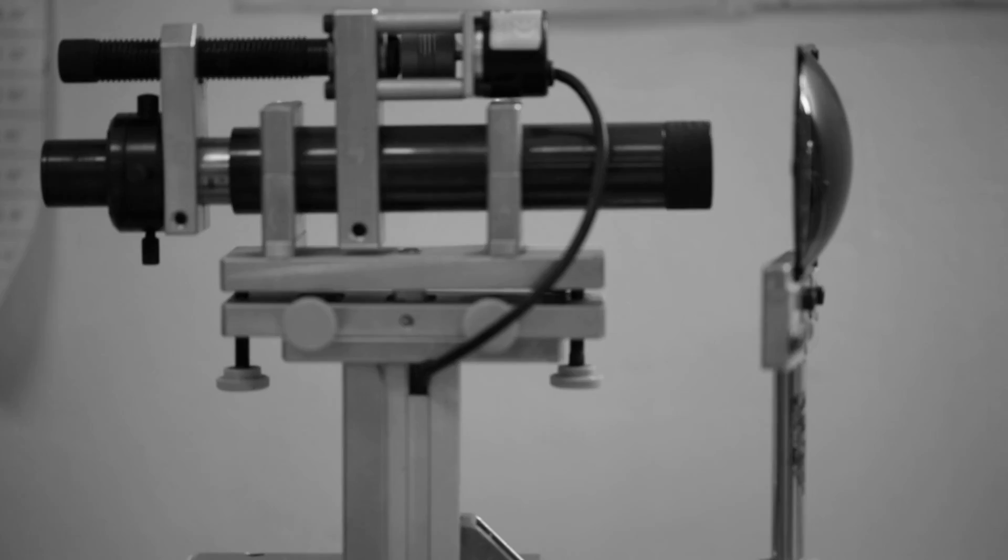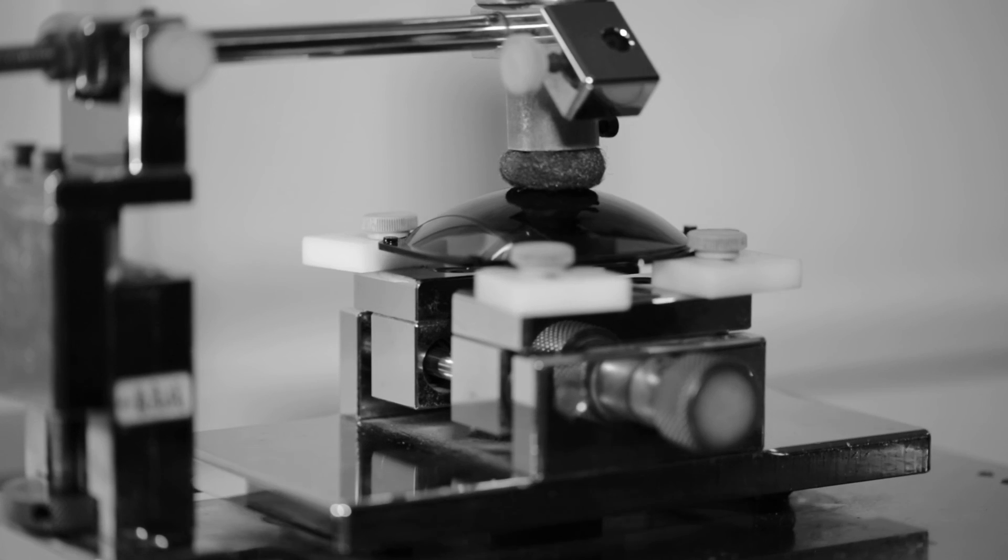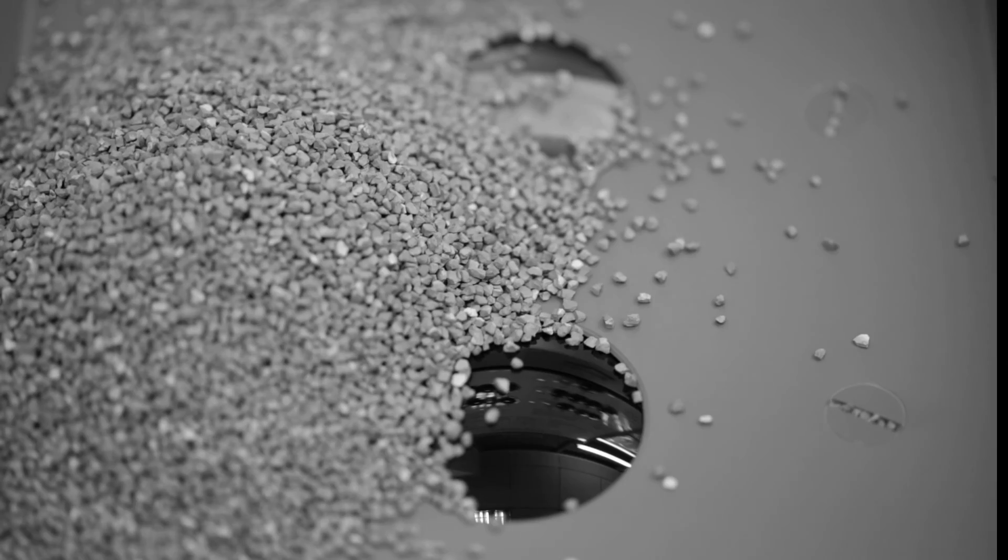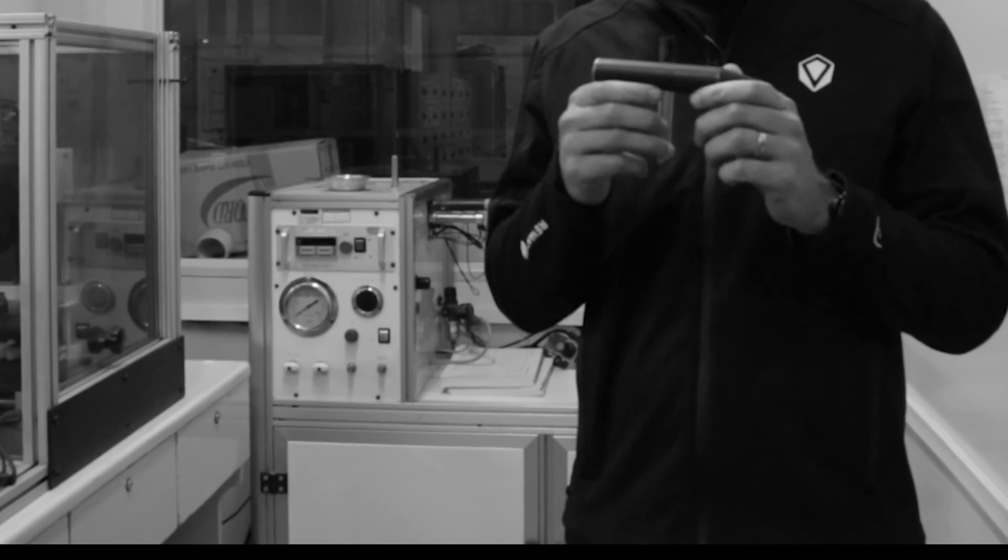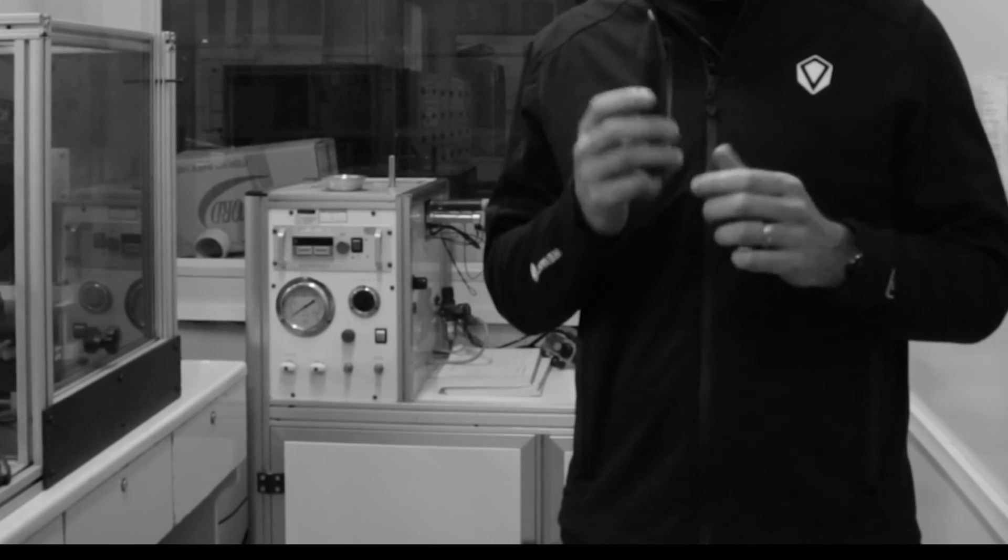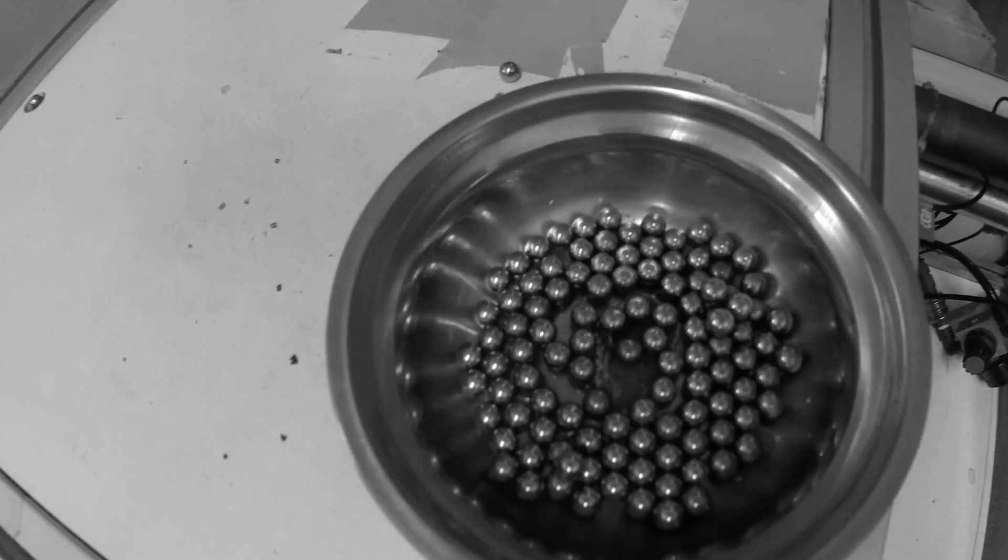The finished lens blanks are then submitted to a quality assurance process in which they undergo rigorous testing including light refraction, durability of the coating, abrasion resistance, high-impact and high velocity resistance, and of course clarity.